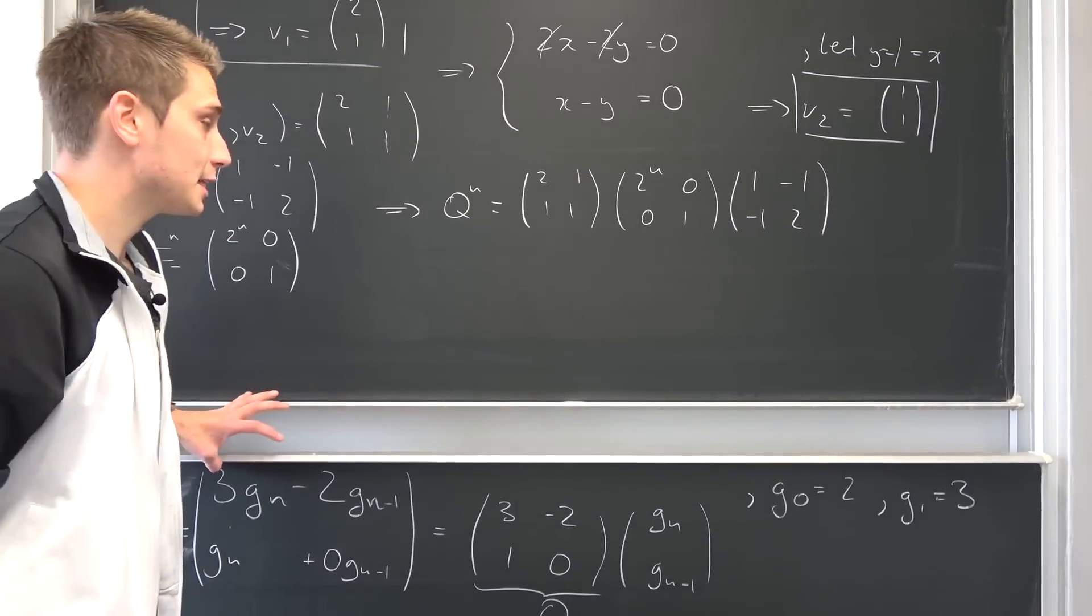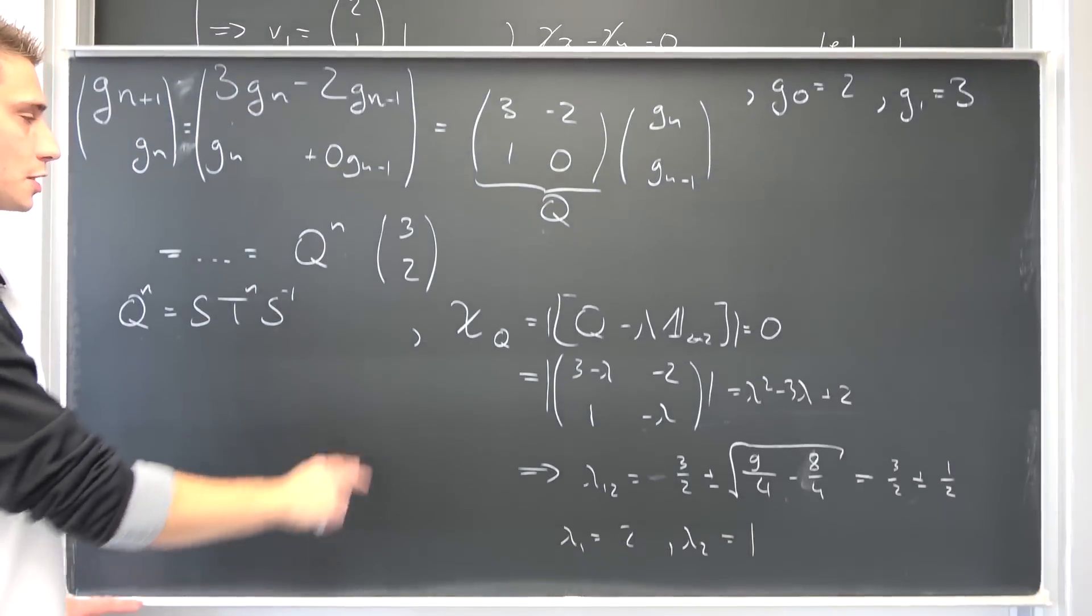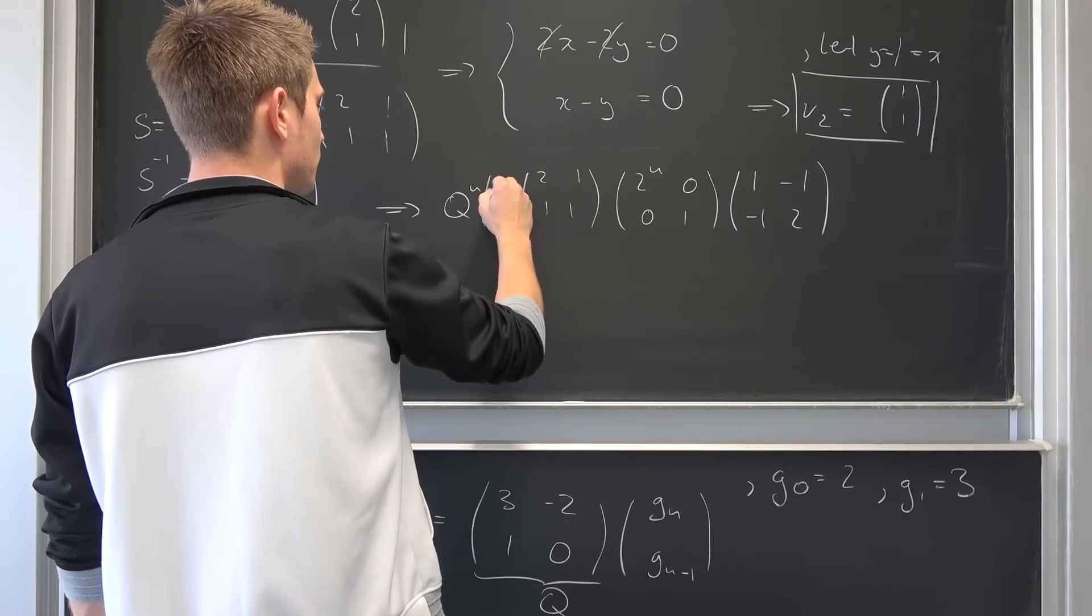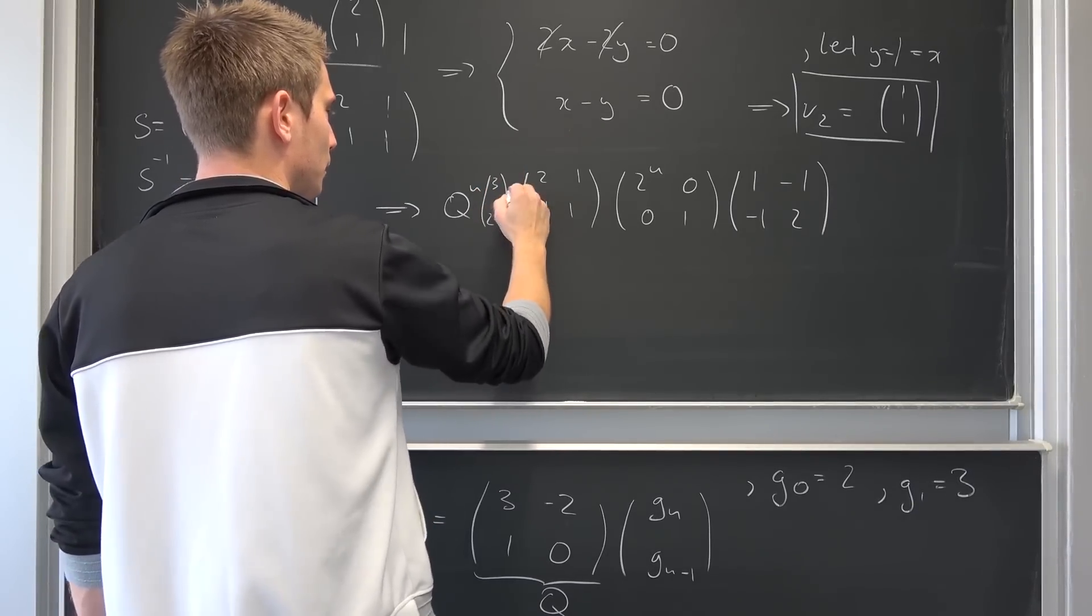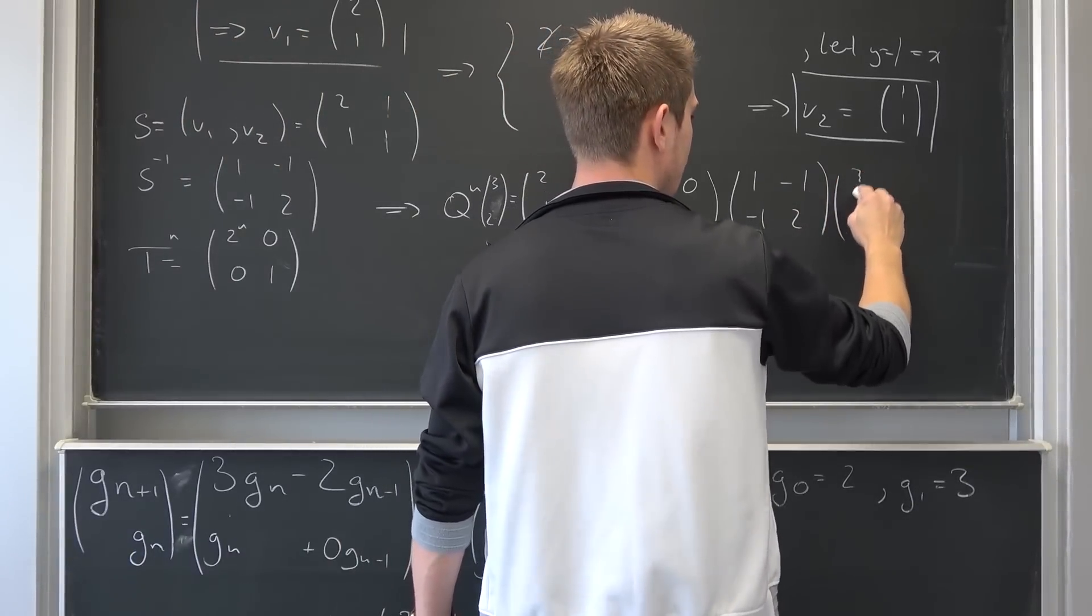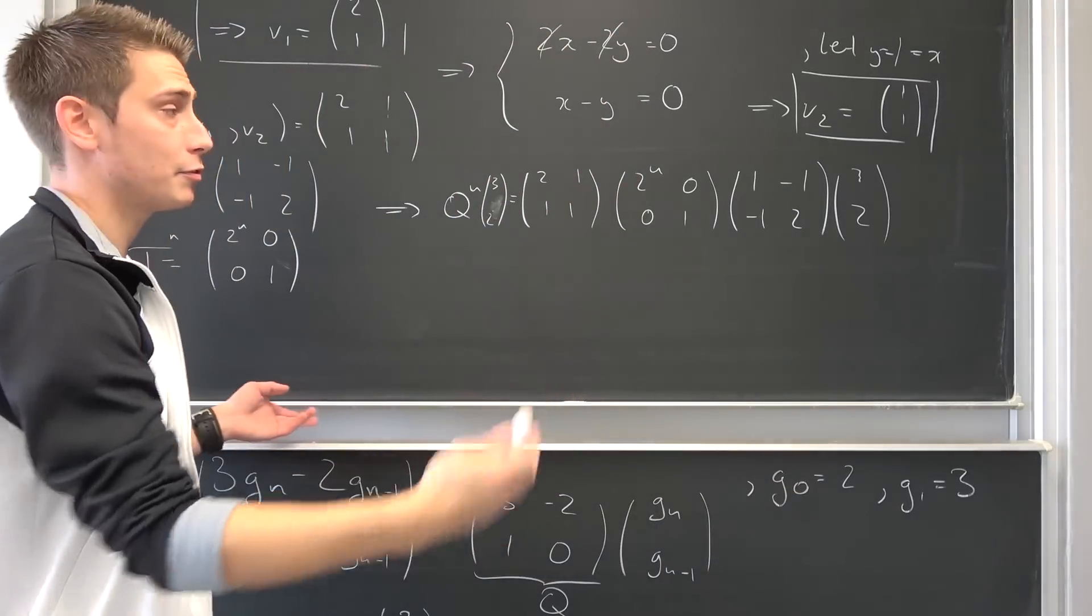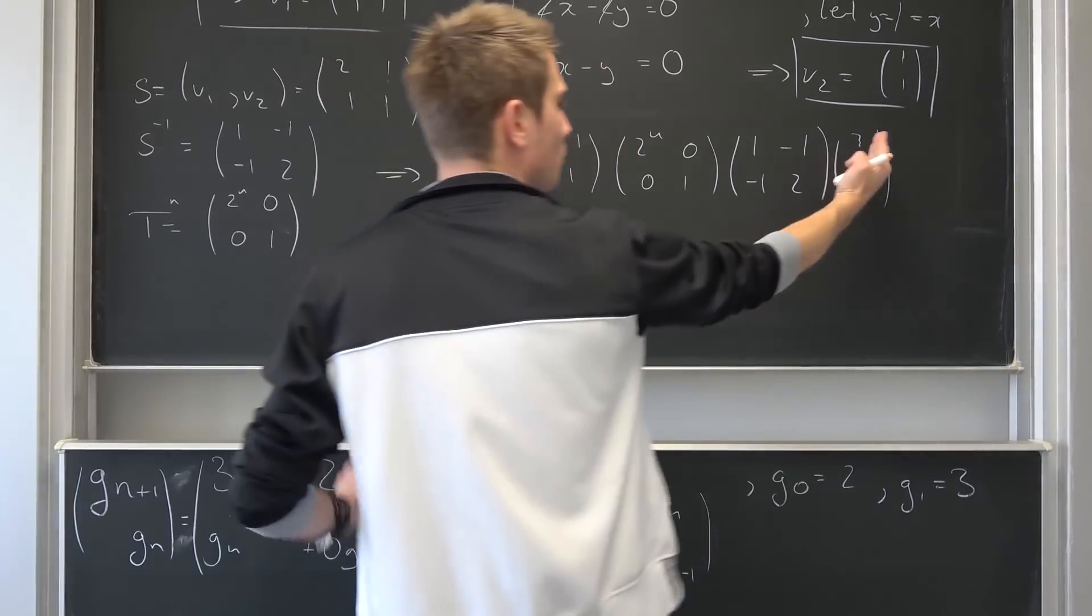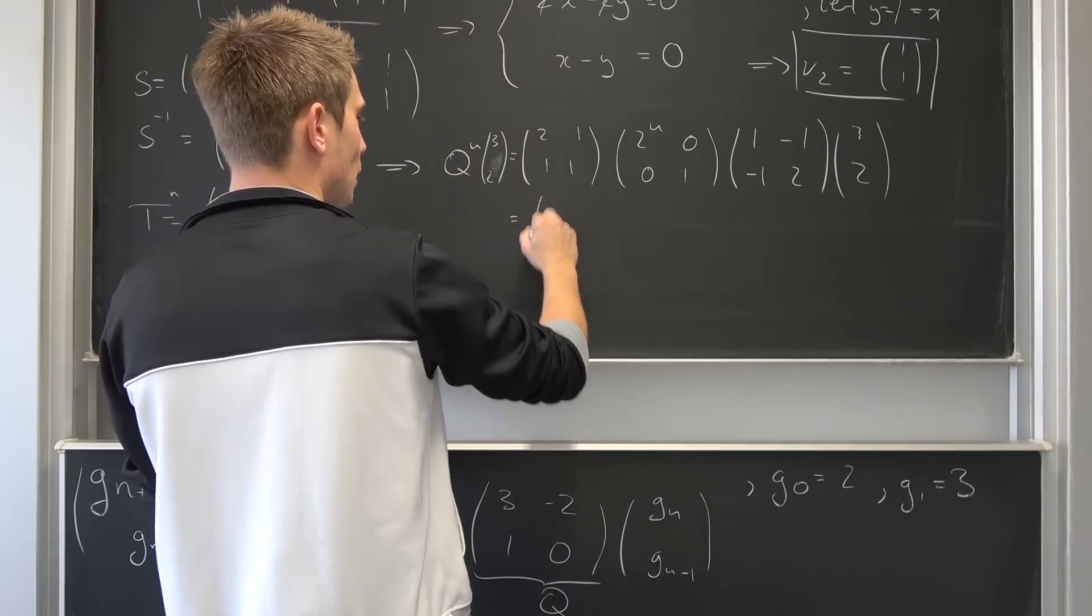And now we are basically done because all we have to do is multiply Q to the nth power by 3, 2. By the vector 3, 2. Same spiel here. Multiply everything out and then we are done. So let's go ahead and get started.